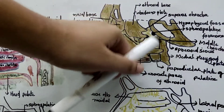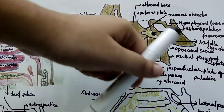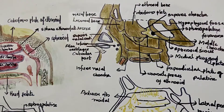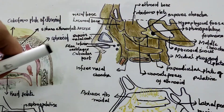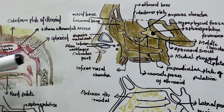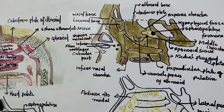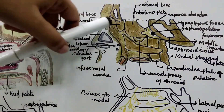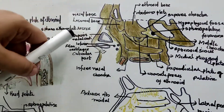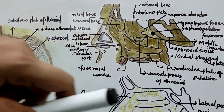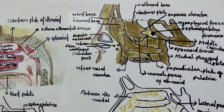The cartilaginous part is made of the superior and inferior nasal cartilages and also three or four alar cartilages.